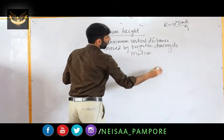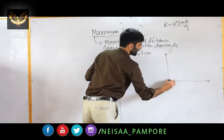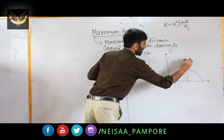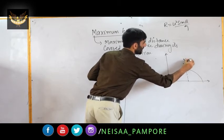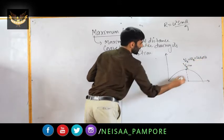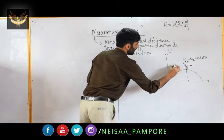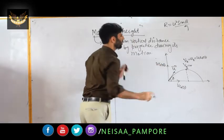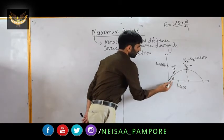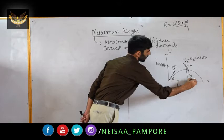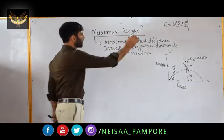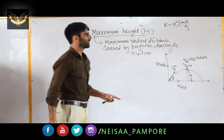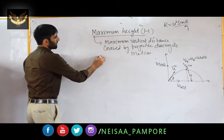At the highest point of its path, the vertical component of velocity is equal to zero, and the horizontal component of velocity v_x is equal to u_x = u cos θ. With initial velocity u at angle θ, the horizontal component is u cos θ and the vertical component is u sin θ. The maximum vertical distance at the highest point is called maximum height, denoted by H.